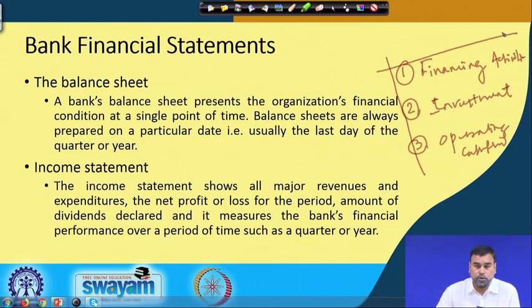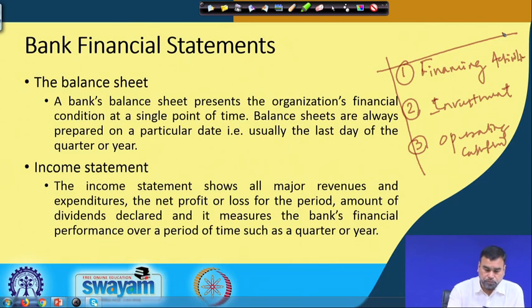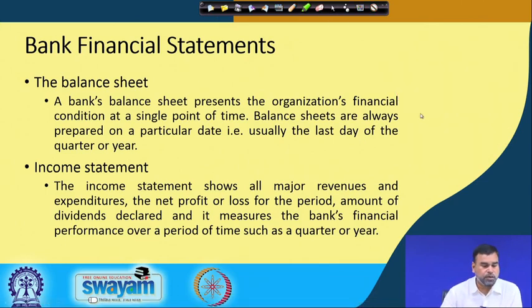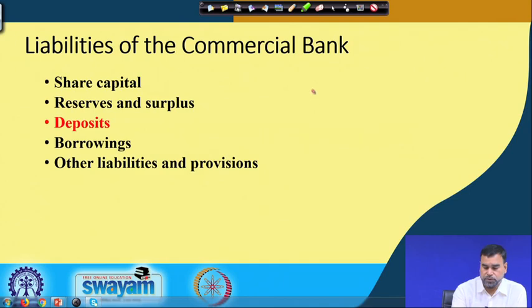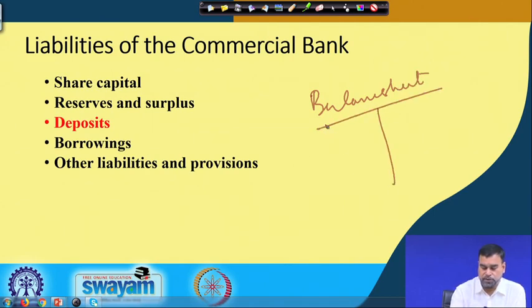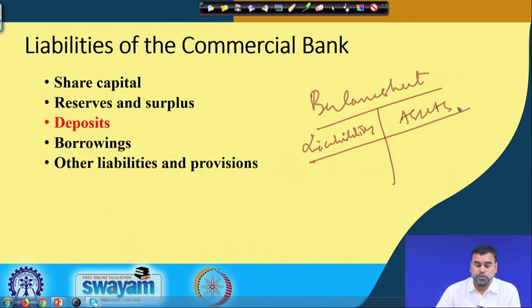But from the banking perspective, we always measure performance in terms of the balance sheet items and the items reflected in the income statements. If you see how the balance sheet is structured, the balance sheet of a particular bank is divided into two sides — one is your liabilities and the other side is assets. There are certain assets and liabilities which are always considered in the balance sheet of a particular organization, including the bank.